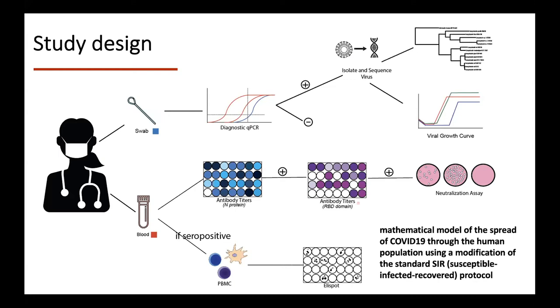The blood samples will be used to look for antibody titers. We will use multiple steps for serology. We'll measure antibody titers using ELISA. We will first look for antibody titers using the nucleocapsid protein as our screening antigen.